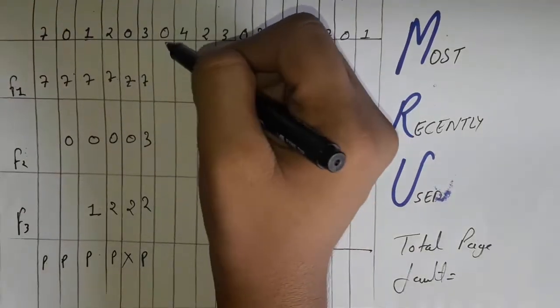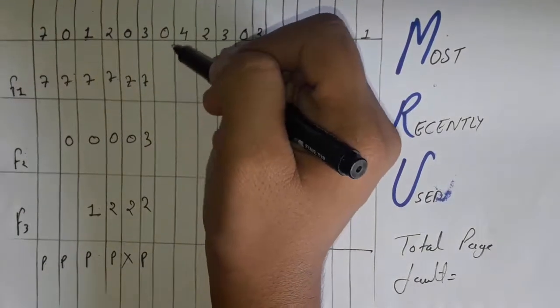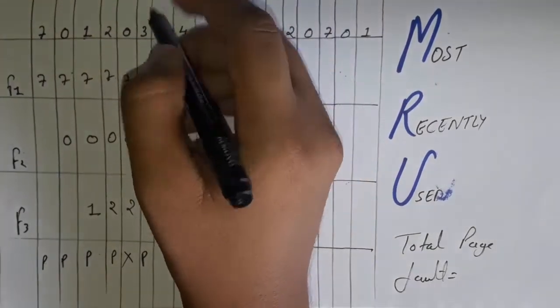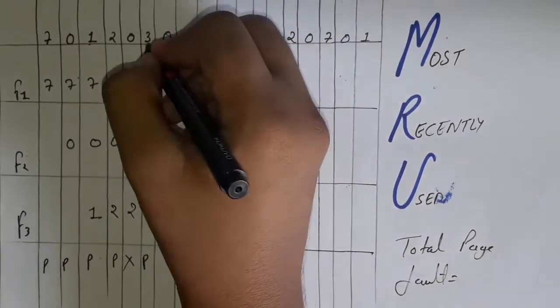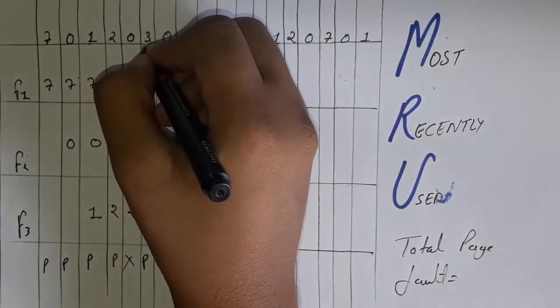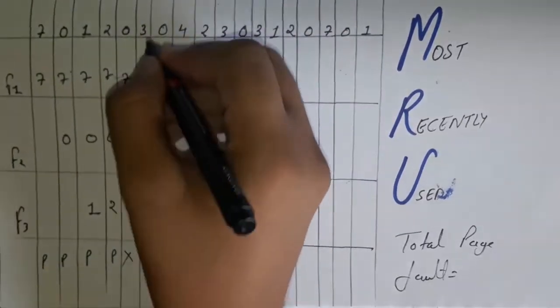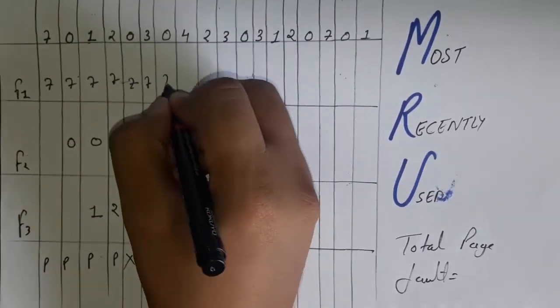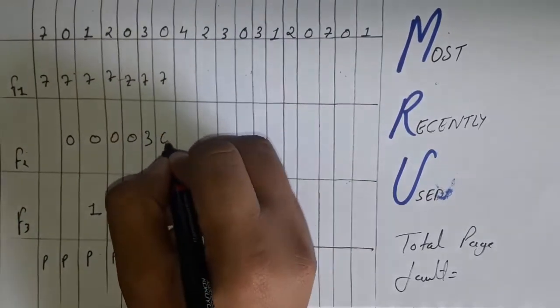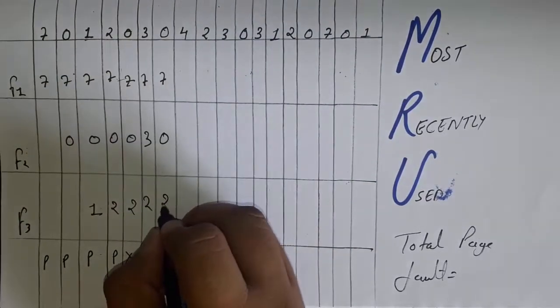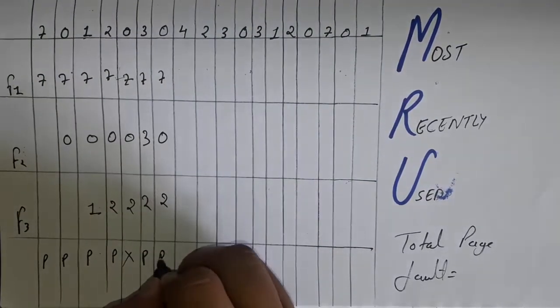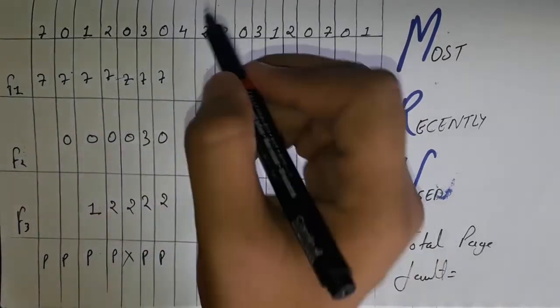Now you can see process 0 arrives. We have to remove 3 because we have just used 3 — this is the Most Recently Used page. So remove 3, write 7, 0, 2 and mark P because a page replacement occurred.